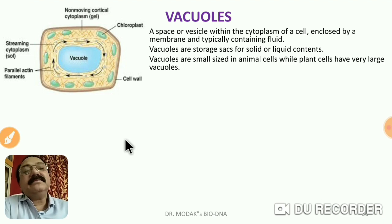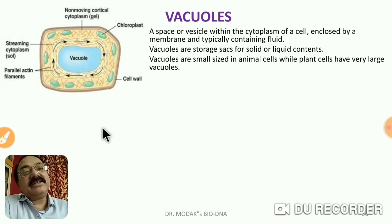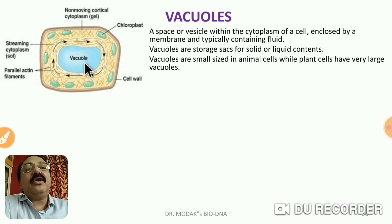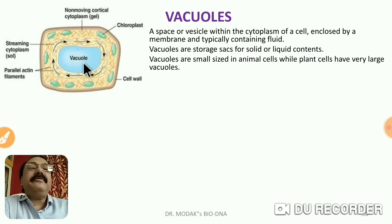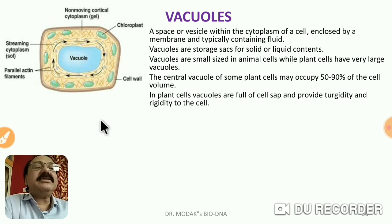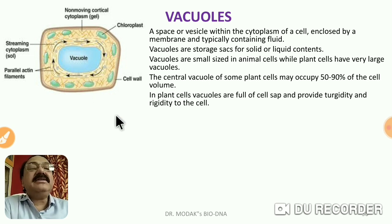Vacuoles are usually present in plant cells. In plant cells the vacuoles are bigger, central, and occupy the major portion, pressing the cytoplasm tightly against the cell wall — this gives the cell turgidity. Vacuoles are storage sacks for solid or liquid content: certain minerals, starch, glucose, flavonoids, and alkaloids are stored in them. In animal cells they are small, but in plant cells they are very large.